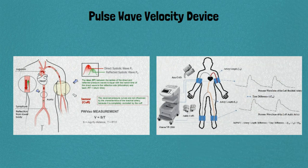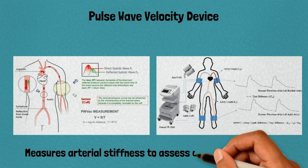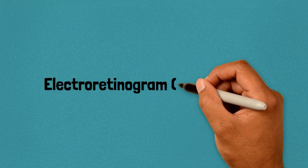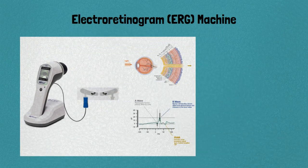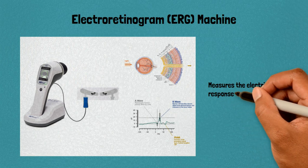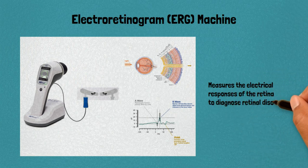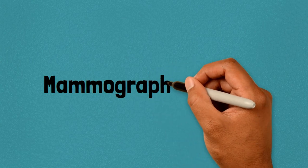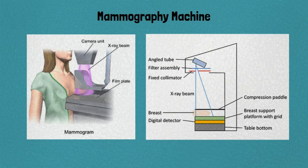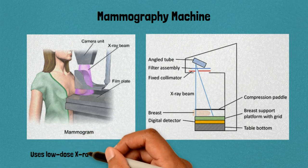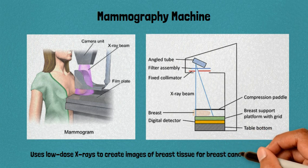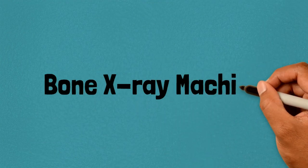30. Pulse wave velocity device: measures arterial stiffness to assess cardiovascular health. 31. Electroretinogram machine: measures the electrical responses of the retina to diagnose retinal disorders. 32. Mammography machine: uses low-dose x-rays to create images of breast tissue for breast cancer screening.